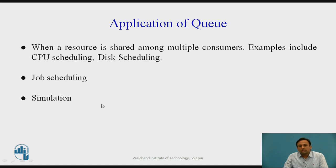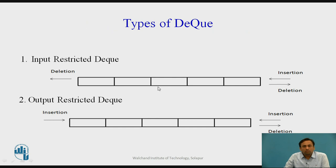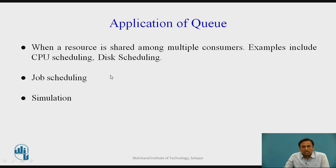In summary, when resources are shared among multiple consumers, queues are used — including in CPU scheduling, disk scheduling, job scheduling, and simulation. The linear queue follows first in first out, and the priority queue follows the same principle but with priority assigned to data, where the smallest or largest elements are removed first. In double ended queue, we have input restricted deque and output restricted deque.